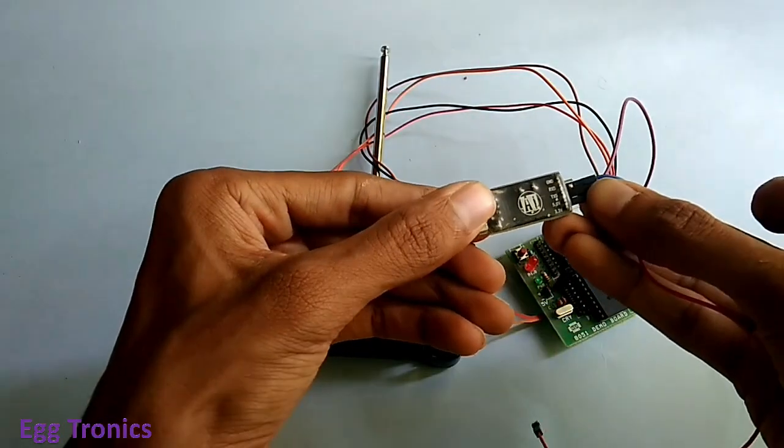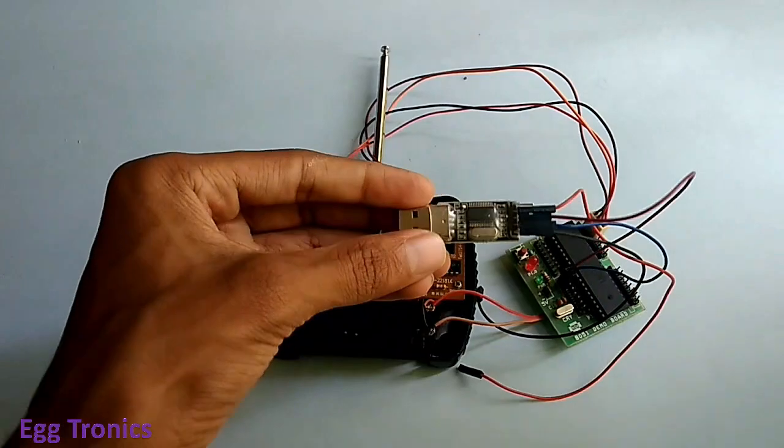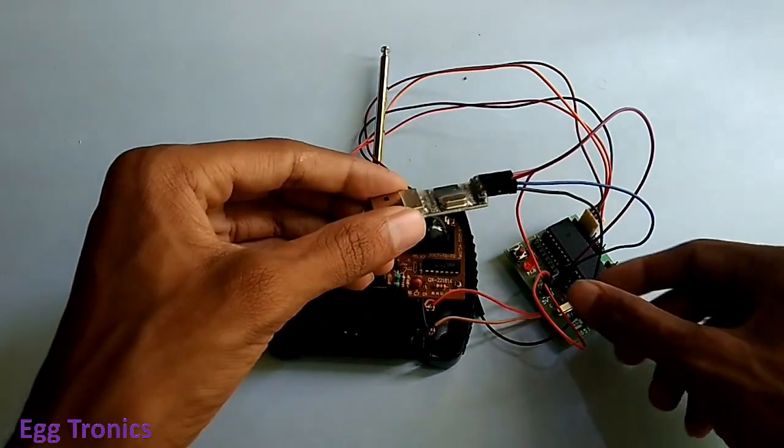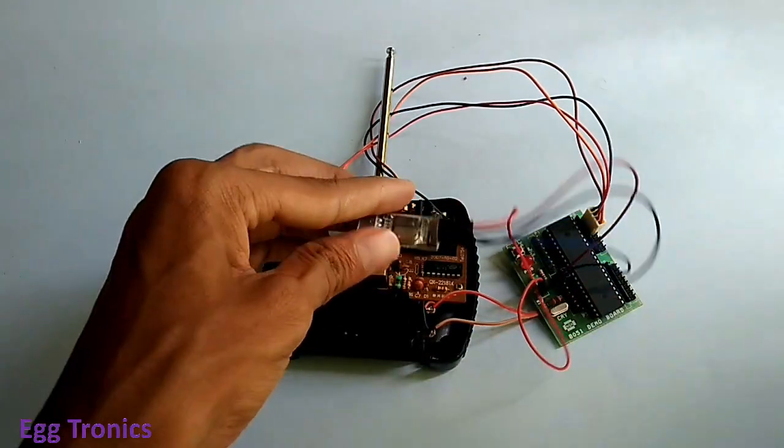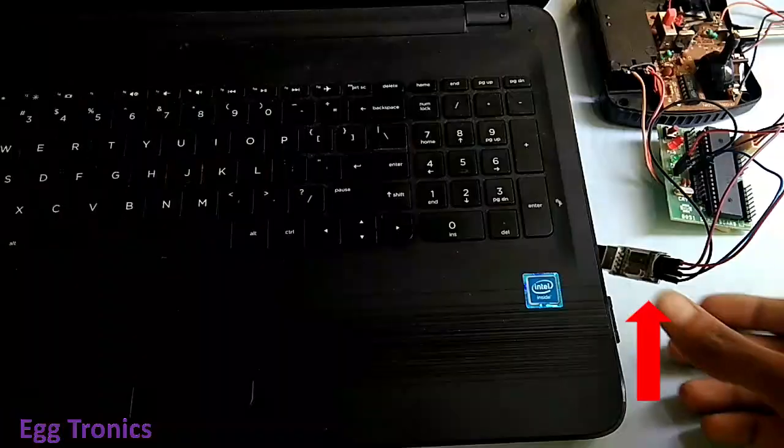I connected 5V and ground pins of the converter to the 8051 board, so I can power both microcontroller and the RC remote from the USB port.